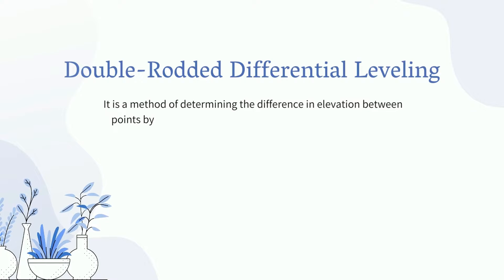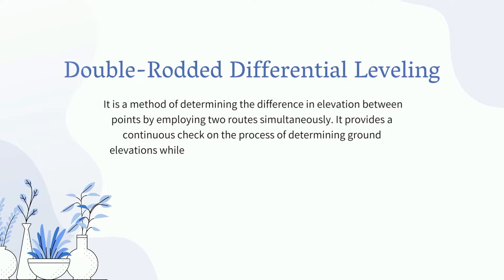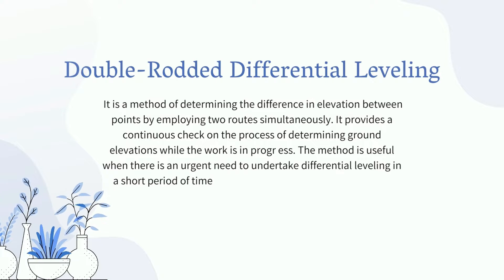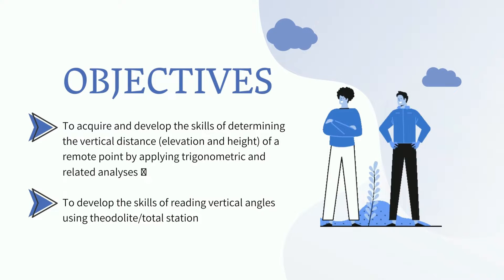It is a method of determining the difference in elevation between points by employing two routes simultaneously. It provides a continuous check on the process of determining ground elevations while the work is in progress. The method is useful when there is an urgent need to undertake differential leveling in a short period of time where no established benchmarks are available for checking results. This fieldwork aims to acquire and develop the skills of determining the vertical distance of a remote point by applying trigonometric and related analysis to develop the skills of reading vertical angles using a theodolite or total station.